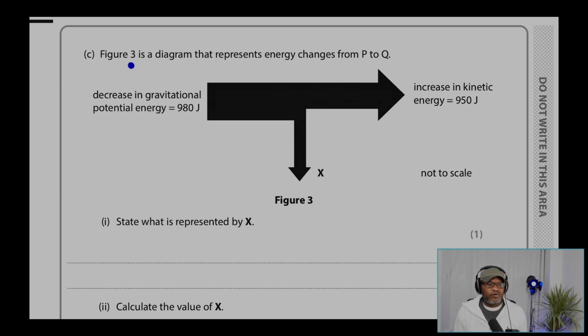Question 2c. Figure 3 is a diagram that represents energy changes from P to Q. Decreasing gravitational potential energy, 980 joules. That's increasing kinetic energy, 950 joules. So we're converting gravitational potential energy to kinetic energy. Energy is wasted in the process and that's X.